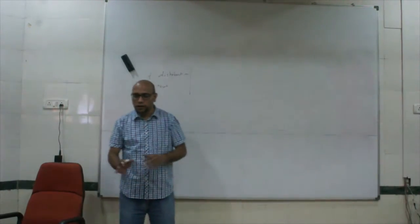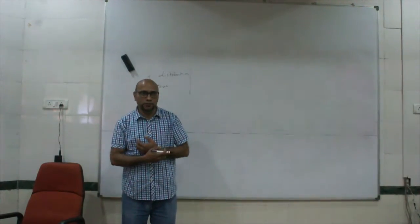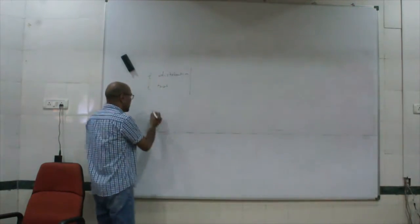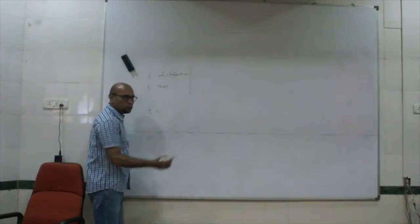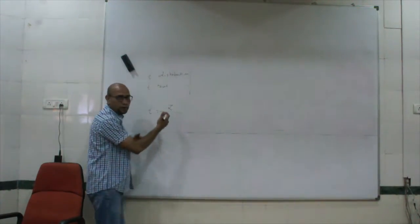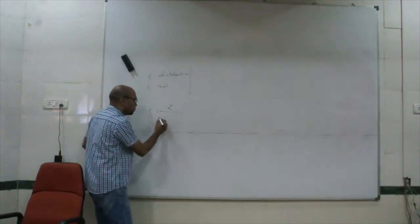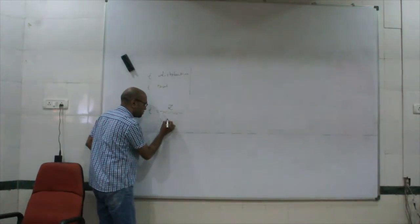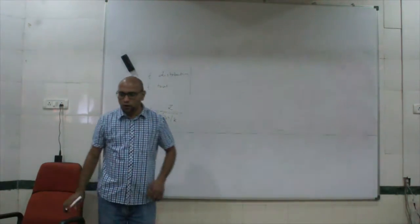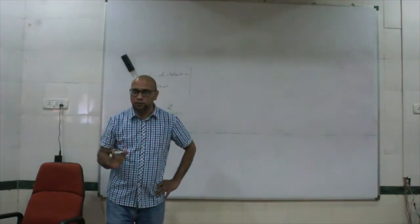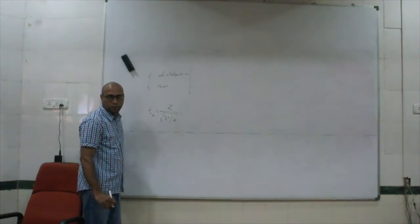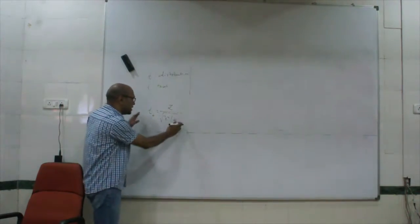Let's look at what t is. We know what the t random variable is. The random variable t is equal to z upon the square root of chi-square upon k. This is what the t random variable is. This t random variable is at k degrees of freedom. So this is the t random variable.